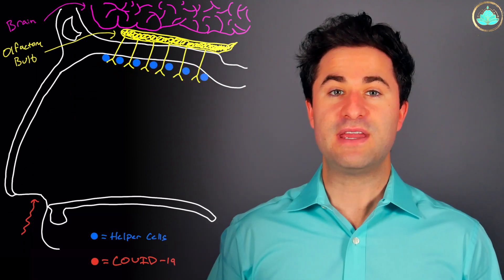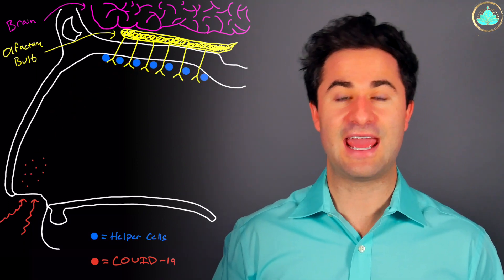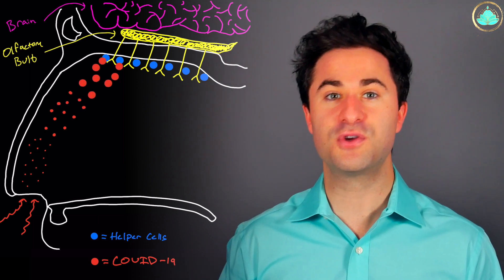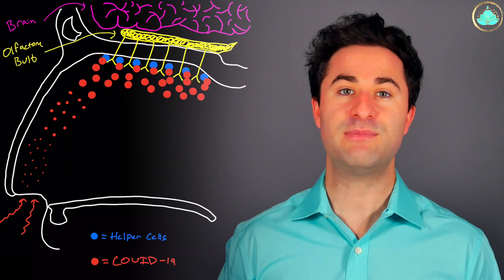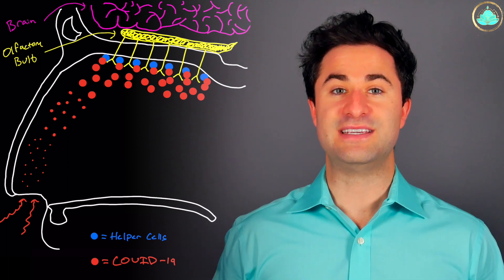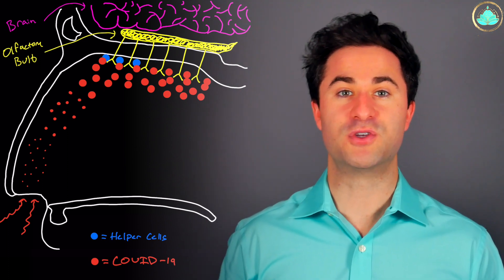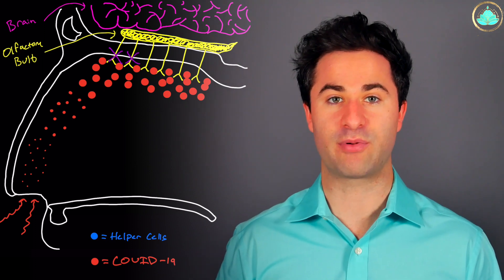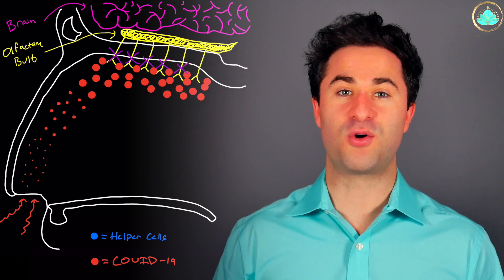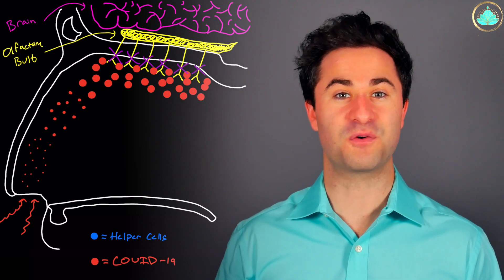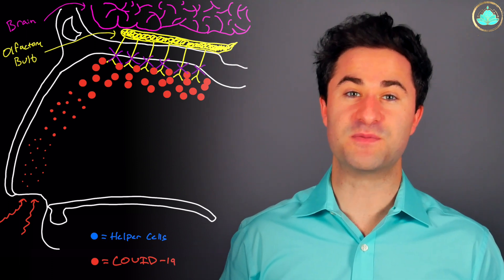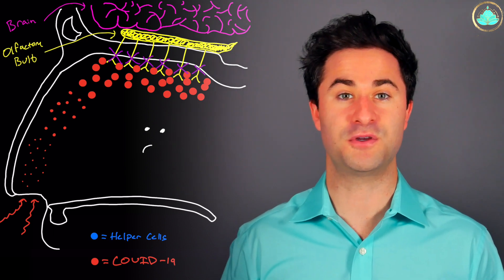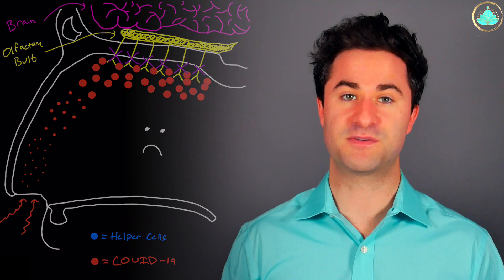So in summary, you breathe in COVID-19, and those virus particles travel through your nostrils to the cells that are responsible for keeping your olfactory bulb healthy. These cells become destroyed, which leads to the neurons in your olfactory bulb not working properly. Without the olfactory bulb and its corresponding neurons working the way it should, the sense of smell signal cannot be transmitted from your nose to your brain, and you ultimately lose your sense of smell.